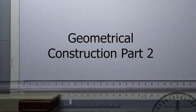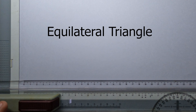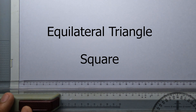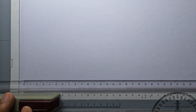Welcome to this geometric drawing tutorial. In this guide, we'll walk you through the classic and satisfying process of drawing two fundamental shapes: the equilateral triangle and the square. Using just a compass, a straight edge, and a pencil, you'll learn how to construct these shapes with perfect symmetry and precision. No measuring required.